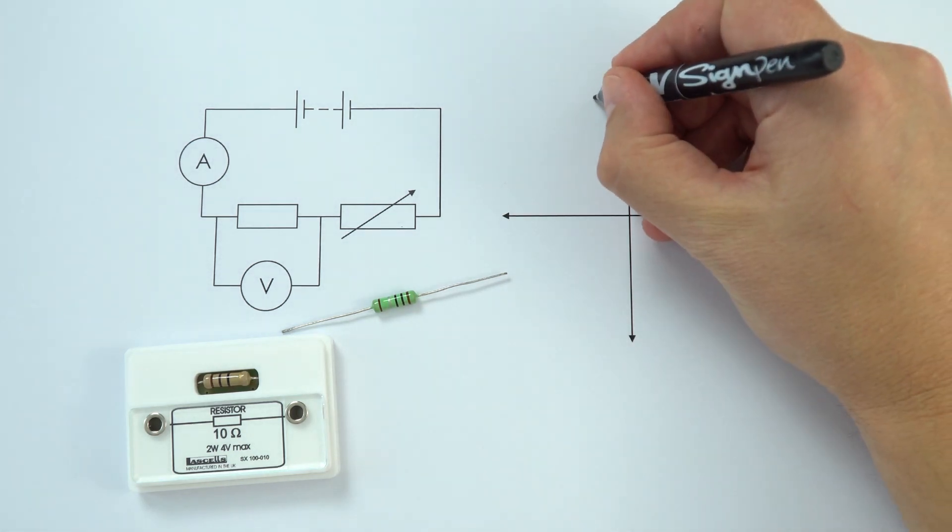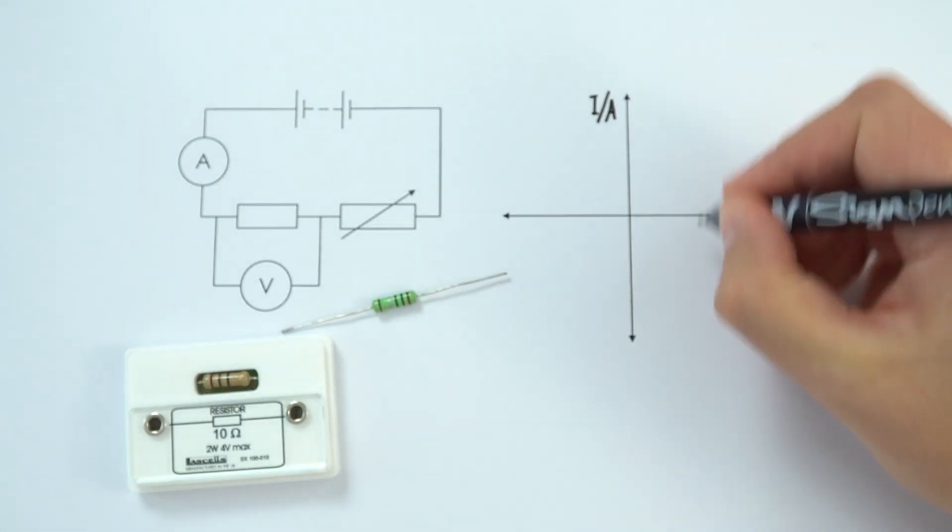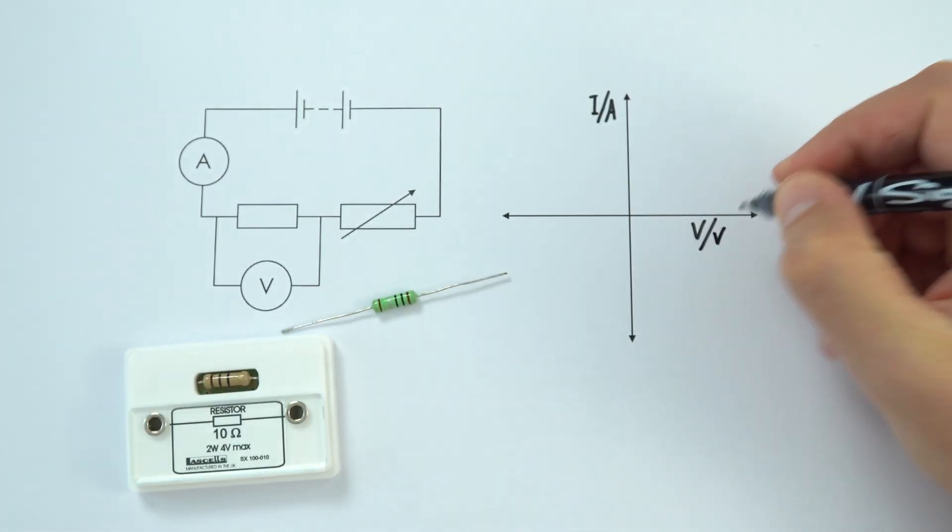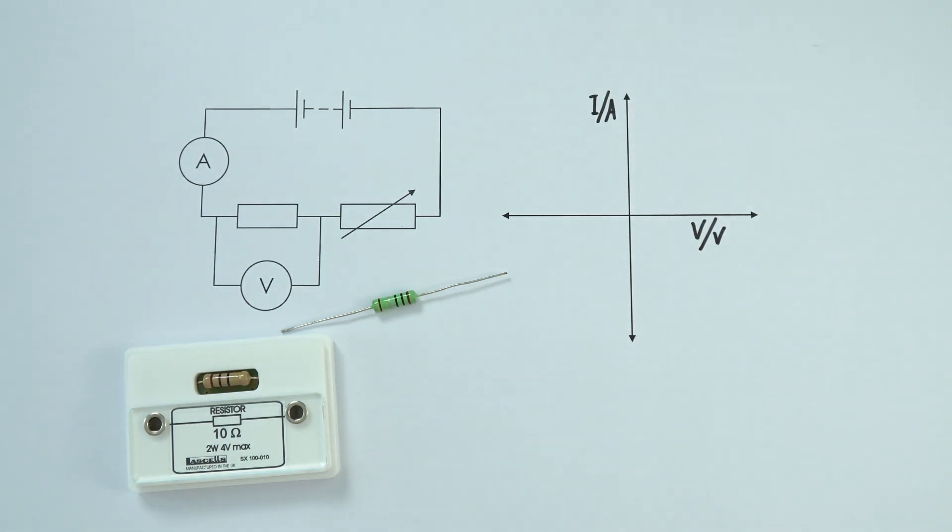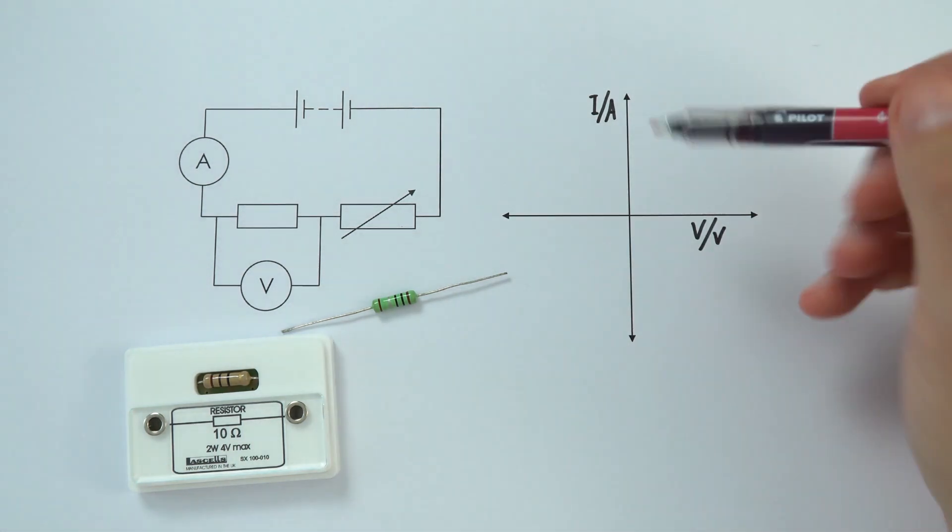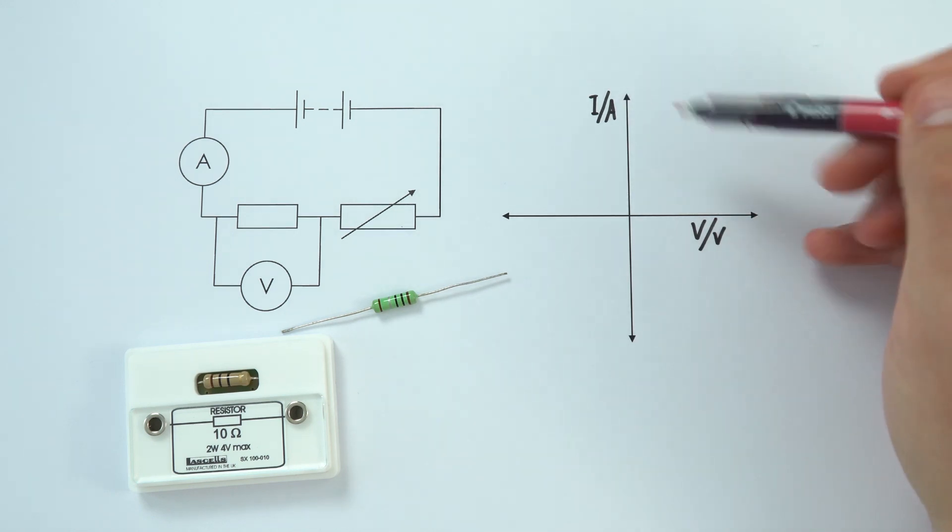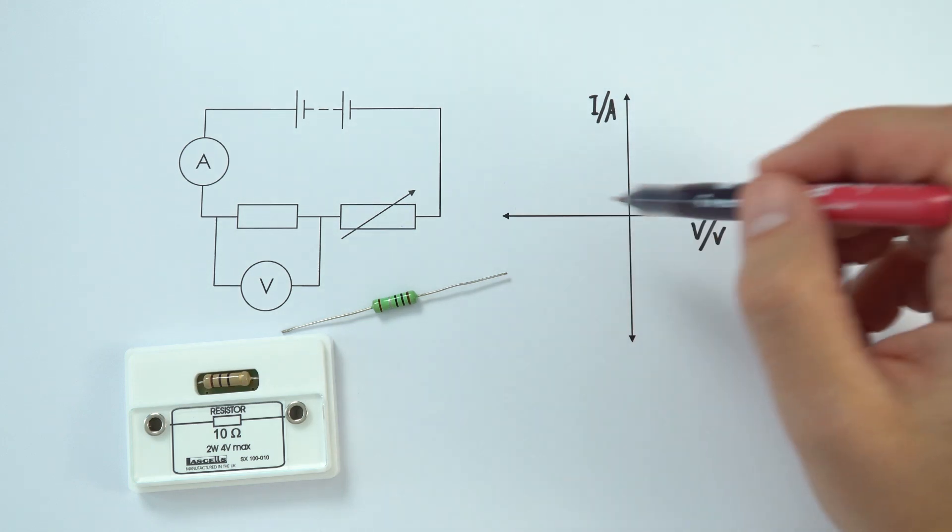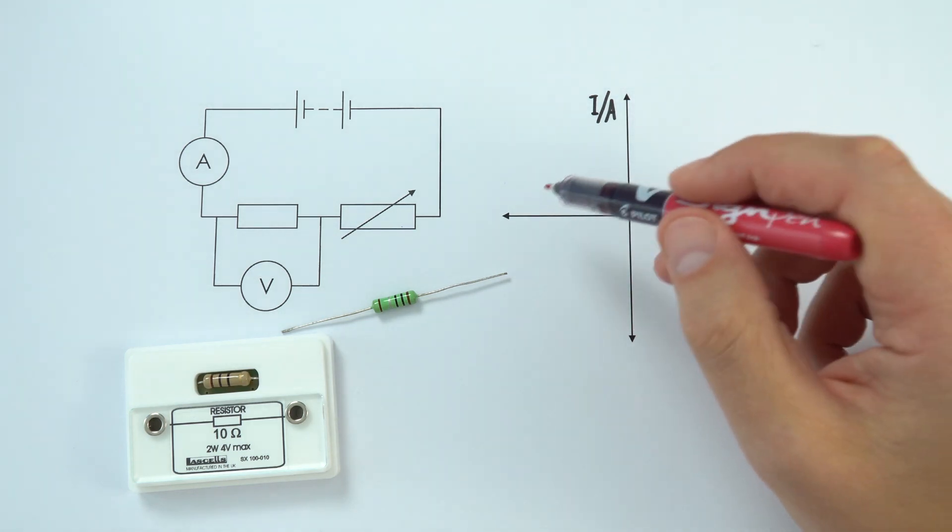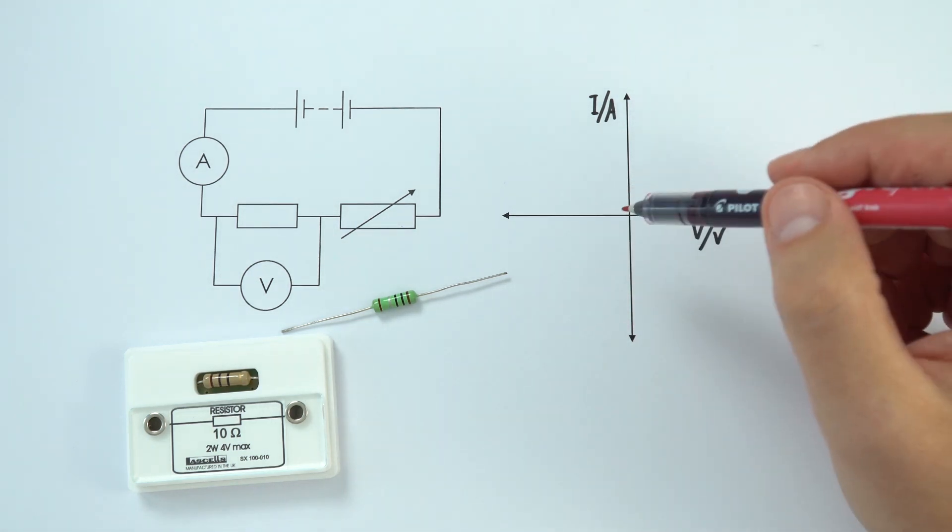When looking at the current measured in amps and the potential difference measured in volts, we find that when you've got a positive current and positive potential difference, the two values are always proportional to one another. When you have negative values of current and potential difference, we get the same effect.